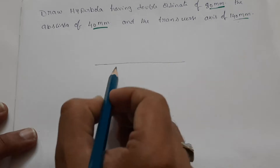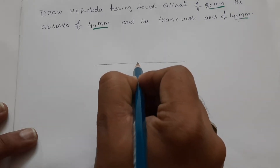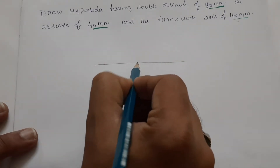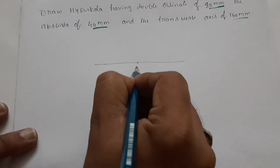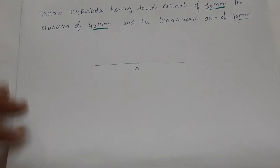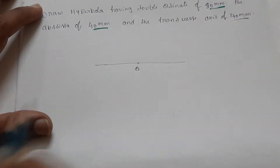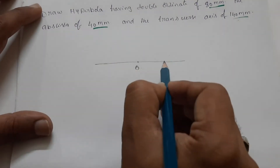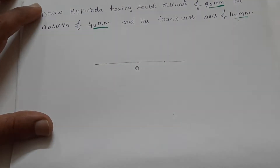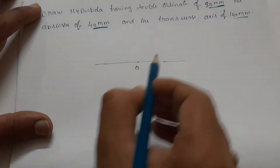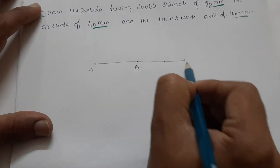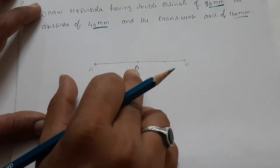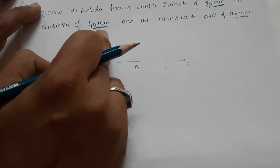So we will take 140 mm. When we take the midpoint, we place the midpoint — we have point A. If you place the axis, abscissa is 40 mm. So we have 40 mm, 40 mm. This is A, this is B — transverse axis — and this is O, half of transverse axis. And this is C — abscissa.